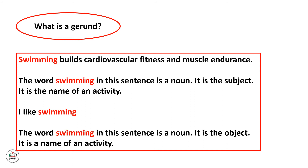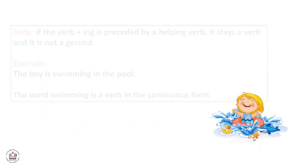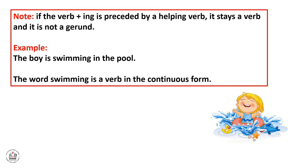Note: if the verb plus 'ing' is preceded by a helping verb, it stays a verb and it is not a gerund. For example, 'The boy is swimming in the pool' — the word 'swimming' here is a verb in the continuous form. Let's read the following sentences.